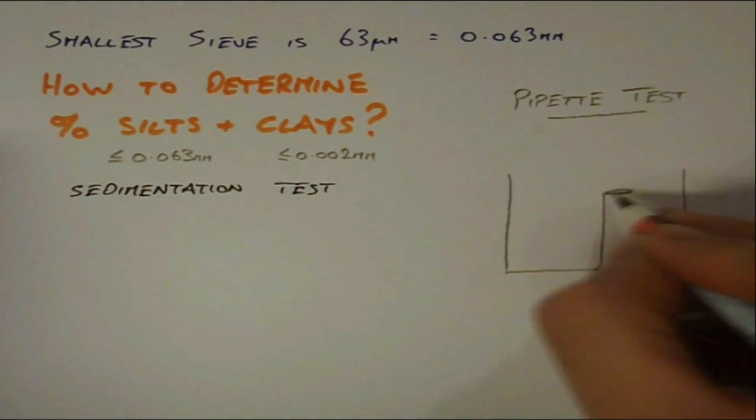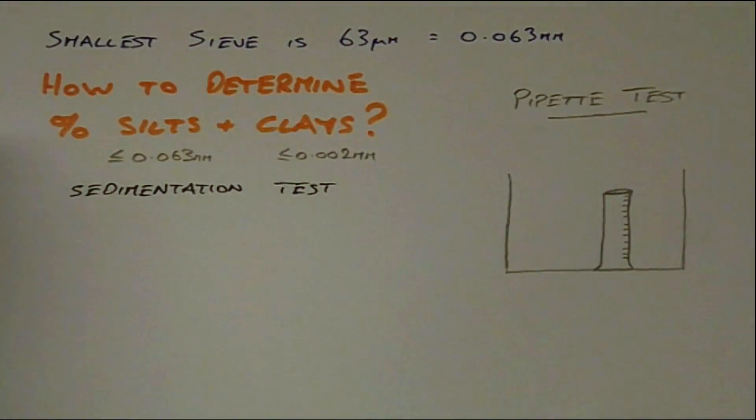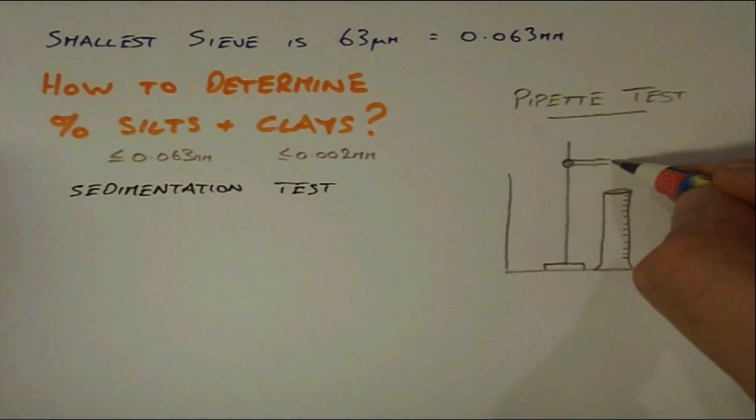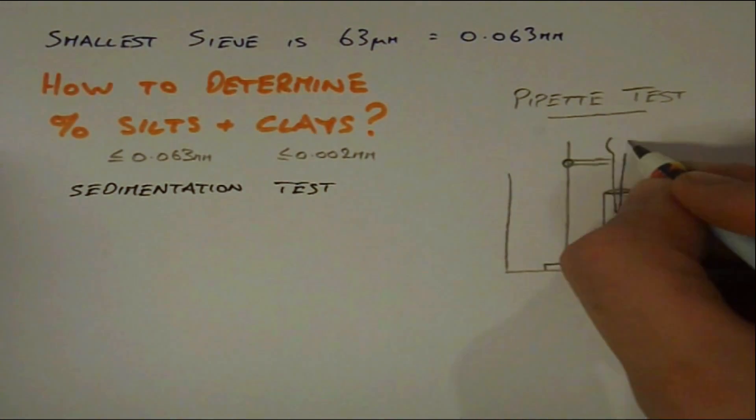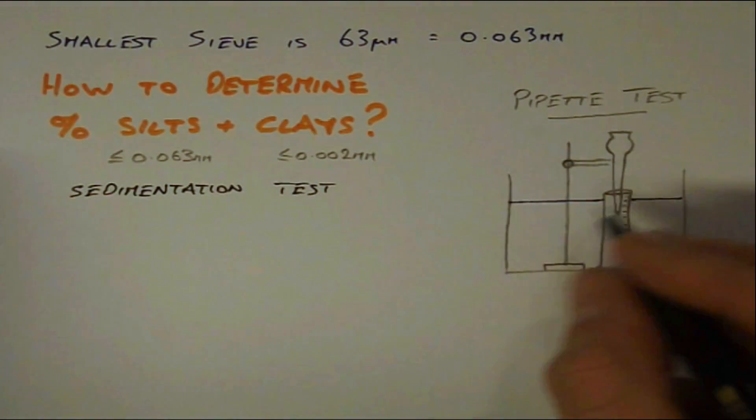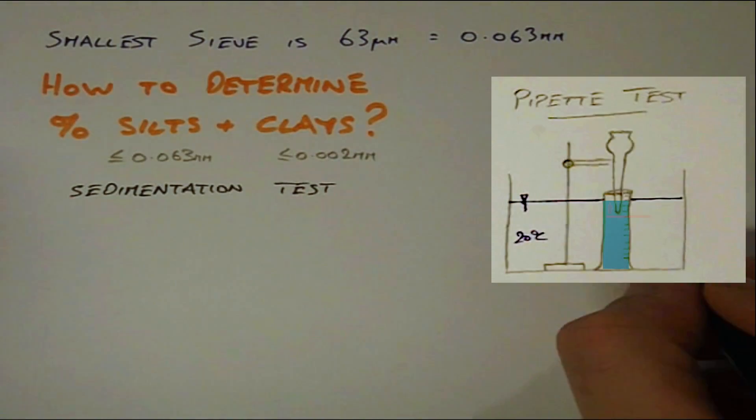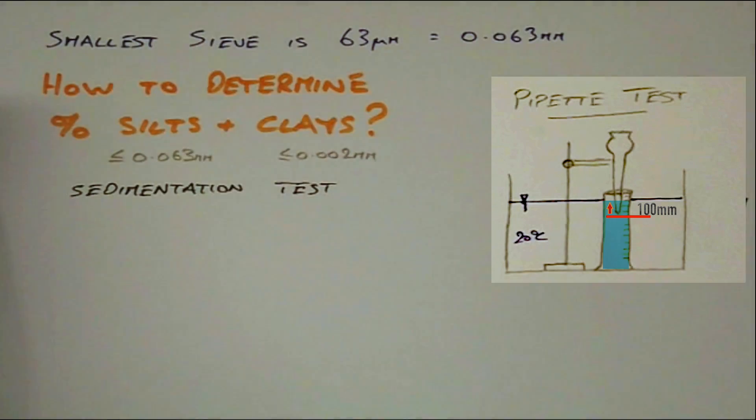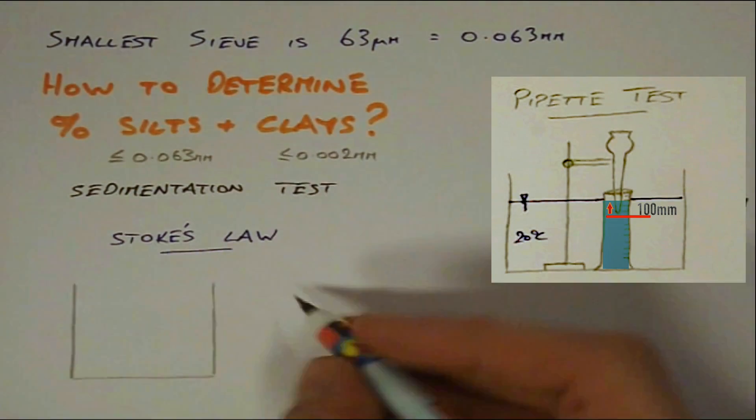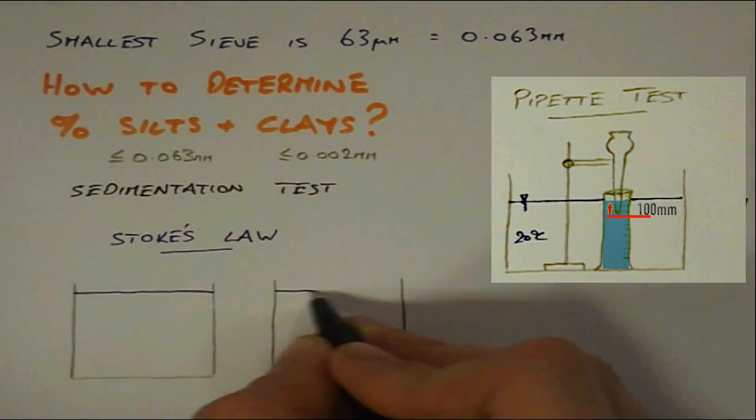The principle of the sedimentation test is based on Stokes law. In the pipette method, discrete samples of the soil and water suspension are extracted at a depth of 100 millimeters from the graduated cylinder. This is done at specific time intervals after the mixture has been agitated.